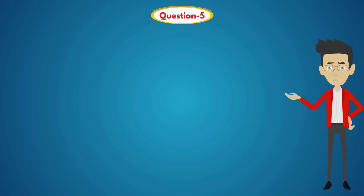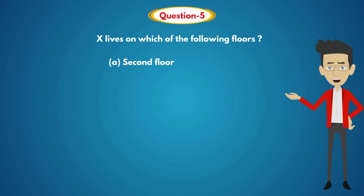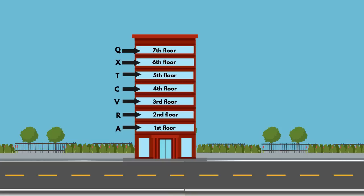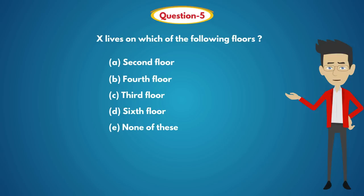Question 5: X lives on which of the following floors? Options: A) 2nd floor, B) 4th floor, C) 3rd floor, D) 6th floor, E) None of these. Solution: X lives on the 6th floor. So the answer is Option D: 6th floor.